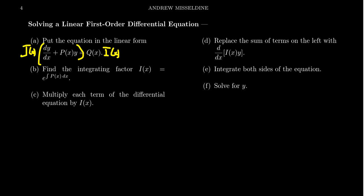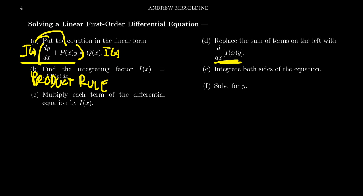On the left-hand side, you also multiply by i(x). When you distribute i(x) through the equation, you recognize that the left-hand side looks like the product rule. As such, you factor the left-hand side as the derivative of i(x) times y. Then you'll have the derivative of i(x)·y with respect to x on the left, and q(x) times i(x) on the right.